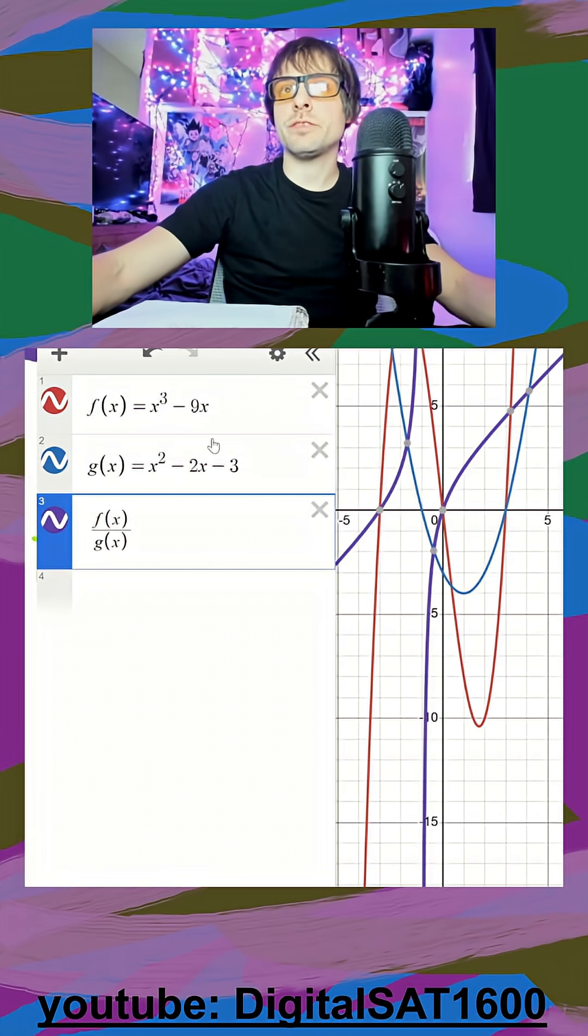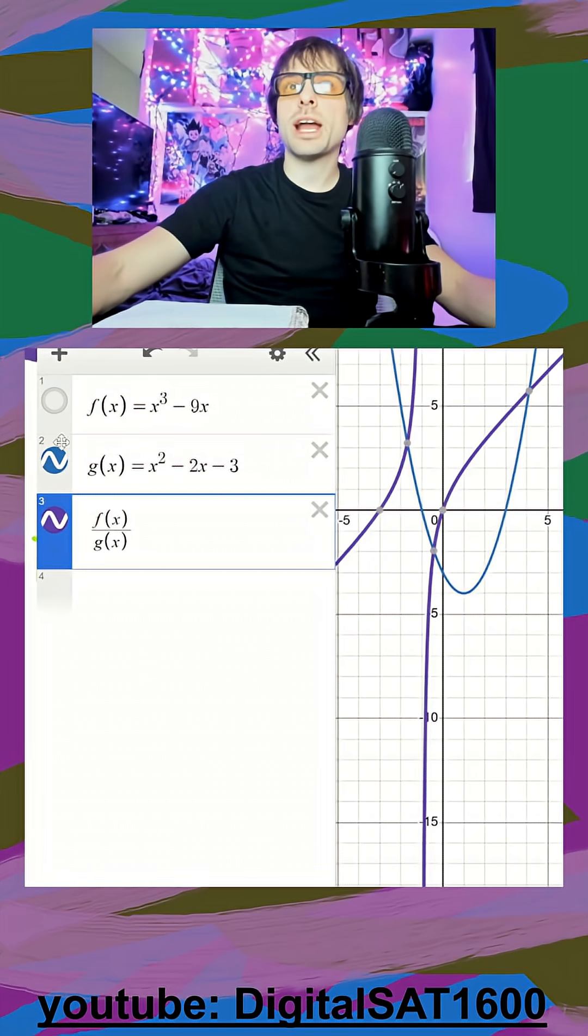Now I don't want to get rid of these two functions because this relies on it. But I do want to hide the colors because I only care about this equation.